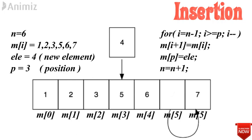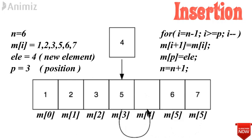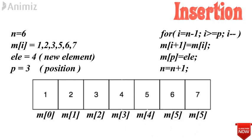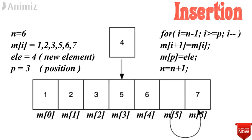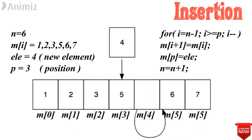This is done using a for loop: for i equal to n minus 1, i greater than or equal to P, i minus minus — this shifts each memory location to the next value. This loop checks which memory location has to be set free and shifts the other values to the next memory location. Once the values are shifted, the element ELE is placed at position m of P, giving that position the value ELE.